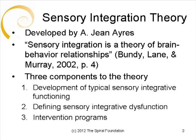Sensory integration was developed in the 1970s by A.G. Ayres, an occupational therapist with advanced education in neuroscience and educational psychology. The theory looks at brain-behavior relationships and specifies how sensory processing in the nervous system contributes and impacts the development of behavior, skill, and learning. Sensory integration theory has three main components: how sensory integration facilitates normal development, identification and assessment of patterns of sensory dysfunction, and specific intervention techniques and equipment.